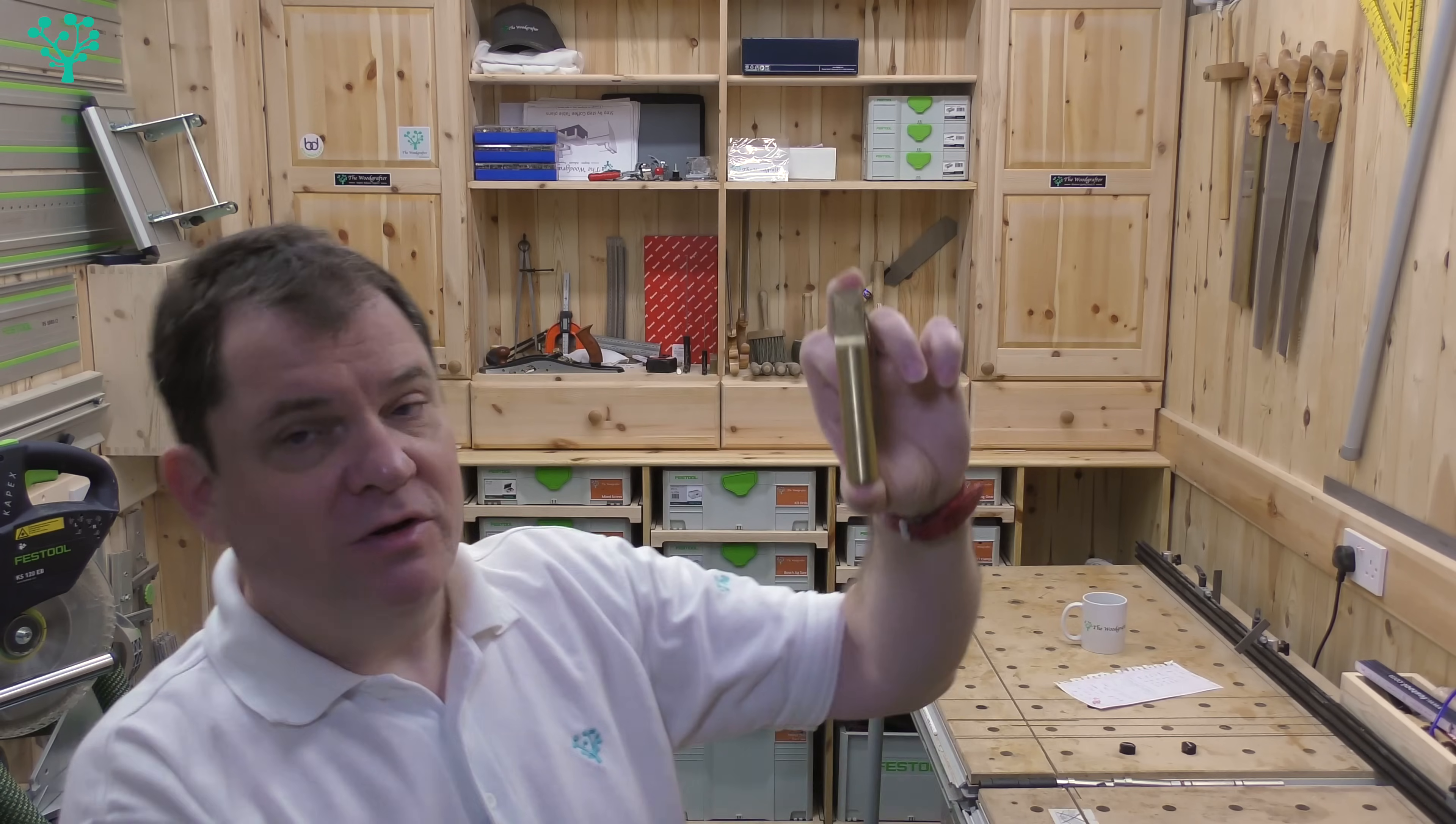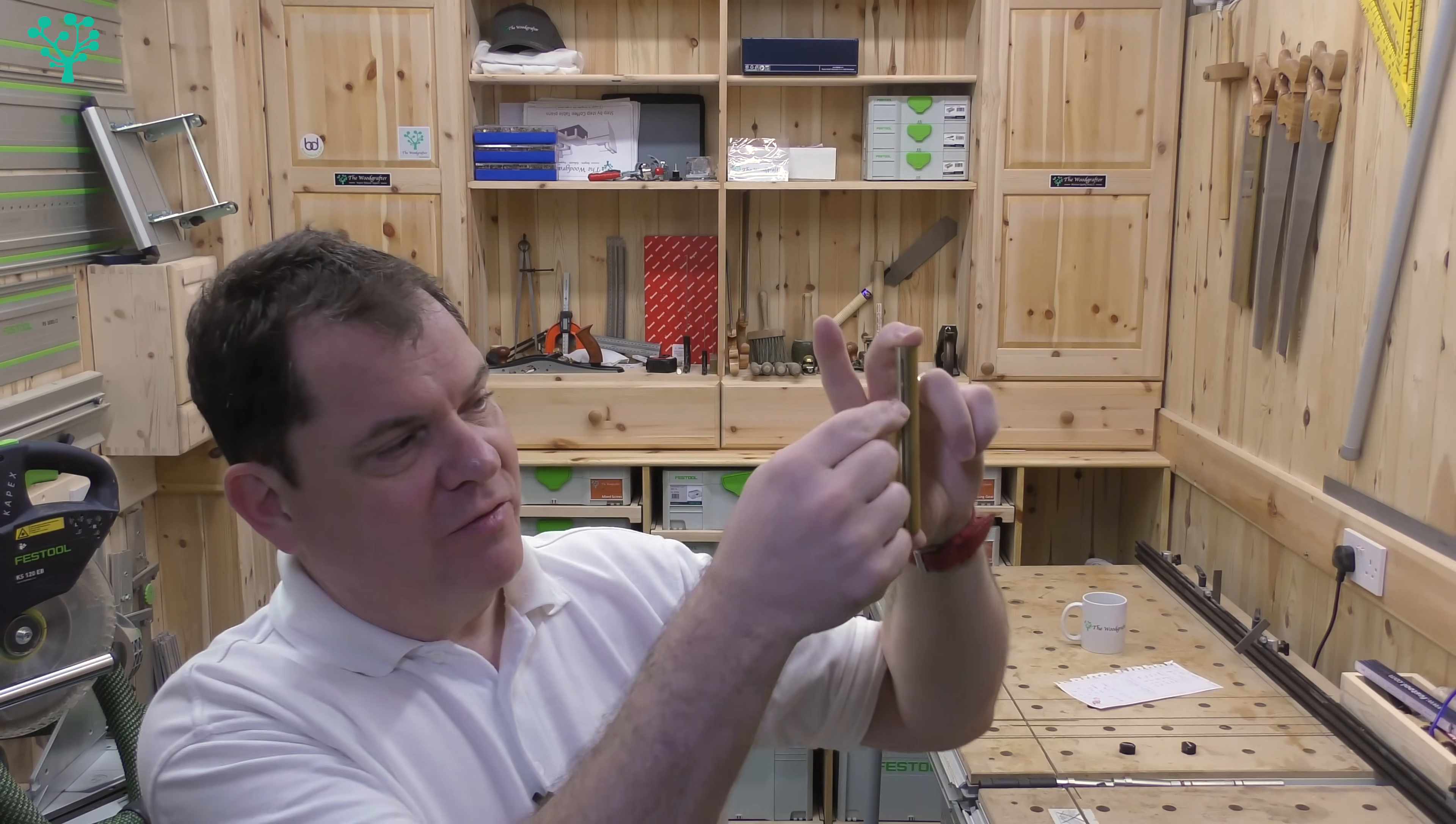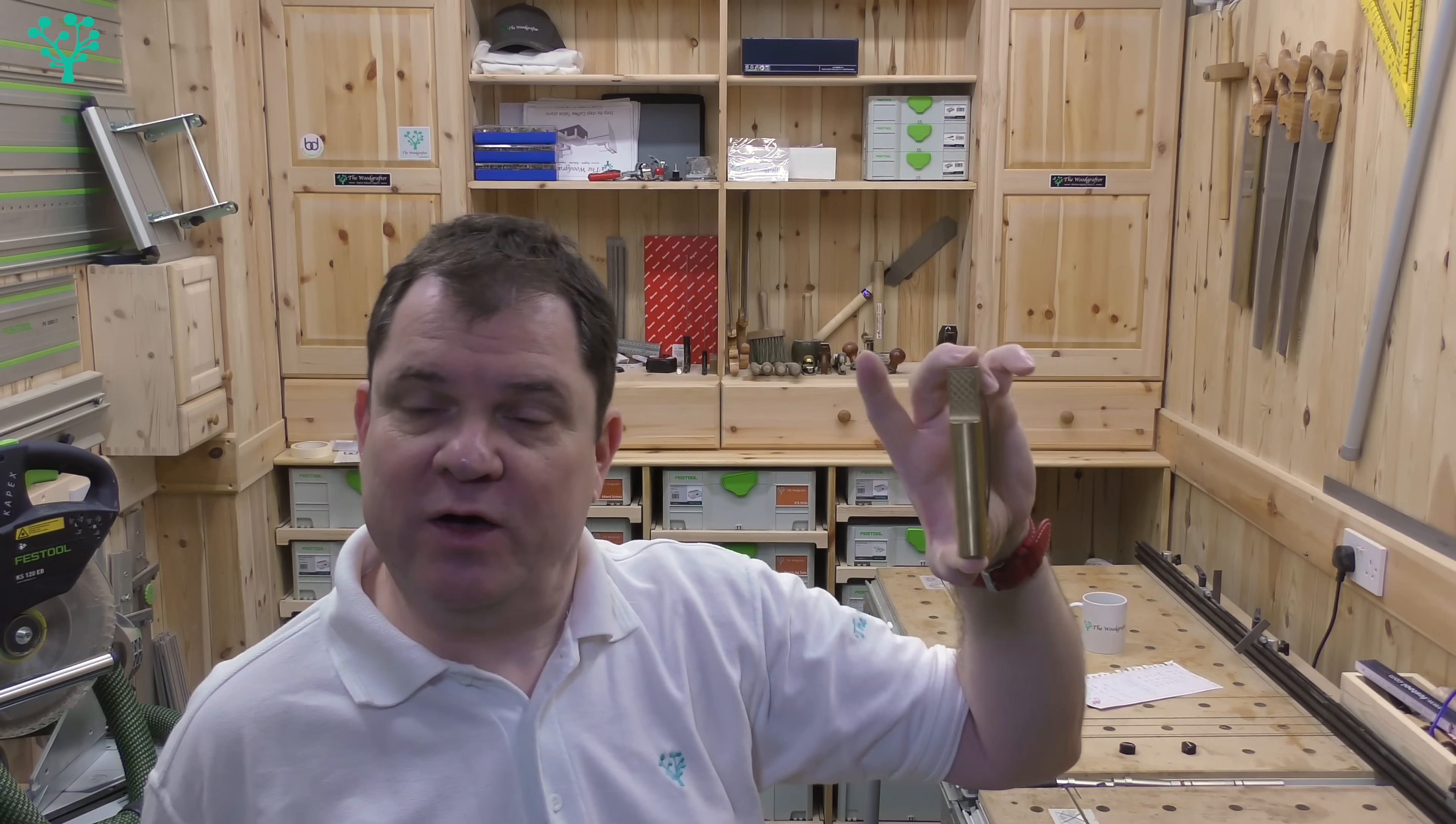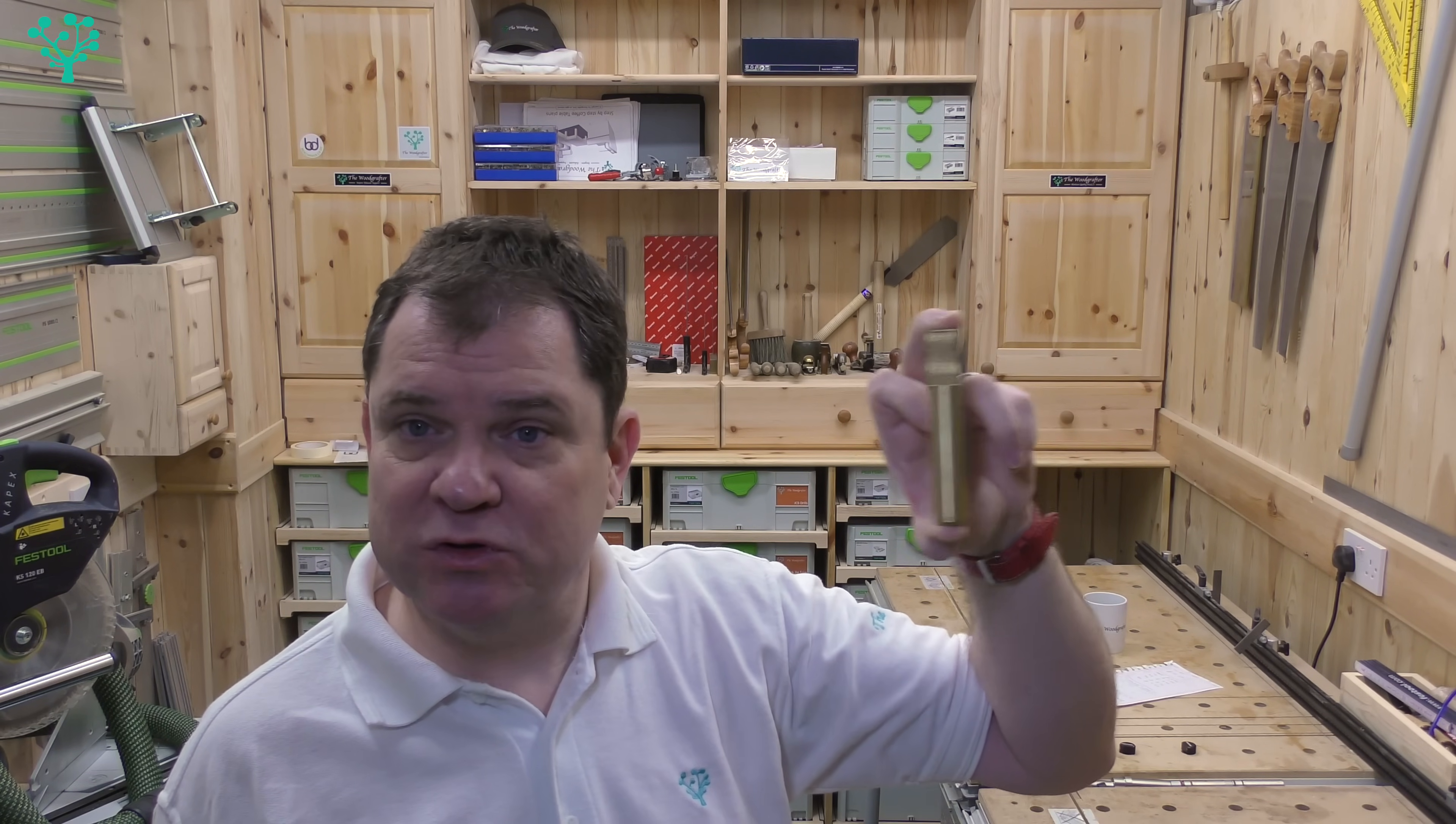Now bench dogs aren't a new thing. They seem to be coming back into vogue as more and more people use this style of workbench, but they've been around for a long time. And their purpose hasn't really changed over the years. You can still get them for your hand tool workbench. This one has been knocking around on my hand tool bench and I've had these for years. They're the same sort of idea, the modern day interpretation. They're round, they fit into a 20mm hole, they've got a grip at the top, and they've got a friction spring at the side.